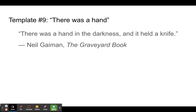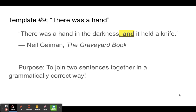Let's take a look closely at what this sentence is doing, why we're using this as a template. The purpose of this kind of sentence is to join two sentences together in a grammatically correct way. Technically, they're called clauses. So our first clause is: there was a hand in the darkness. We could put a period right here, and it would be a completely fine sentence — totally correct.